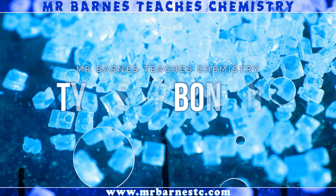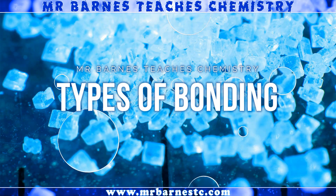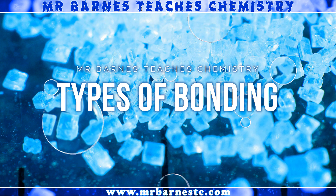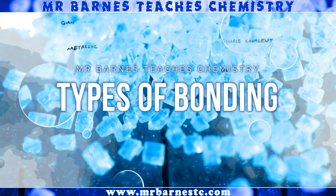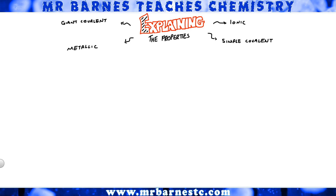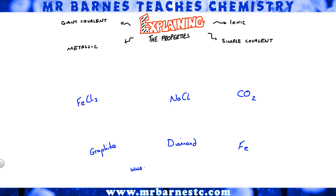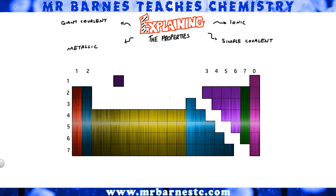Hi guys, welcome to this video looking at how you can work out the type of bonding present in any substance that you could be given in the GCSE exam, and then once you work that out, explaining the properties of them. For example, you could be given lots of different chemicals: FeCl3 iron chloride, NaCl sodium chloride, CO2 carbon dioxide, graphite, diamond, or just Fe iron. Before we do that, you need to work out what type of bonding is occurring.